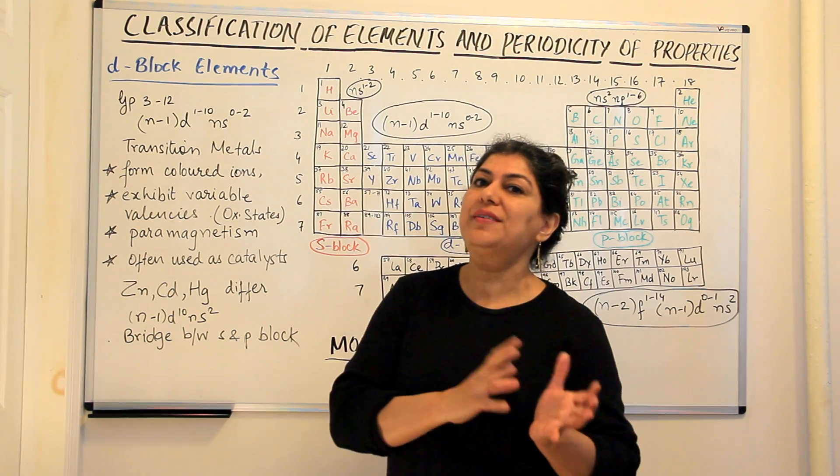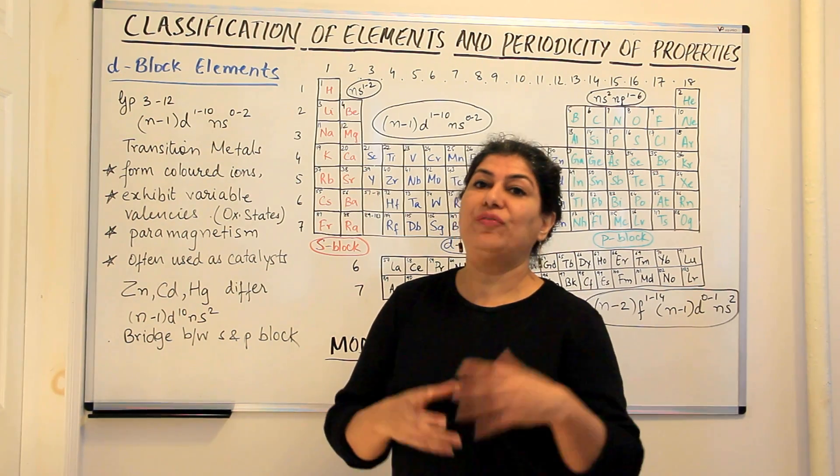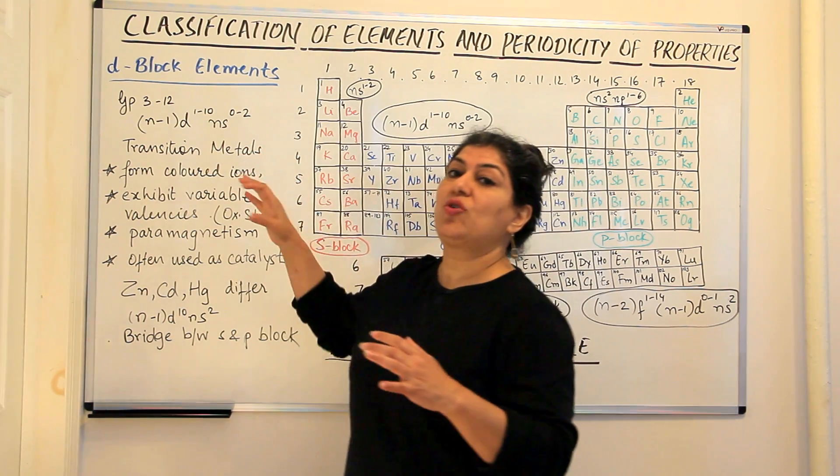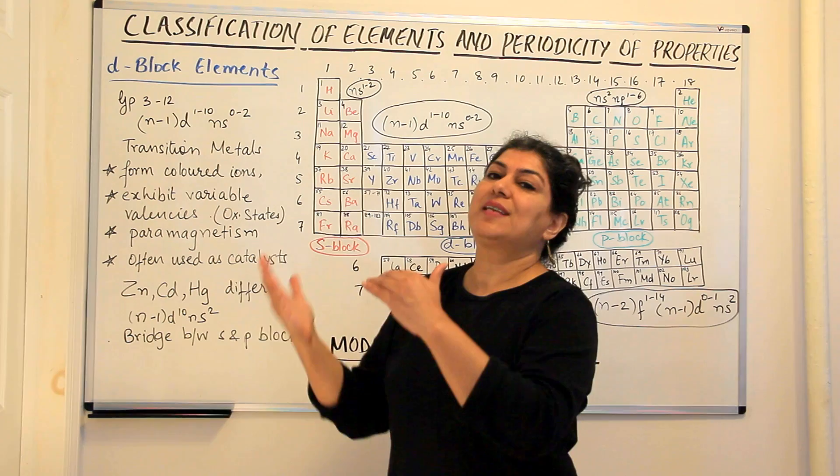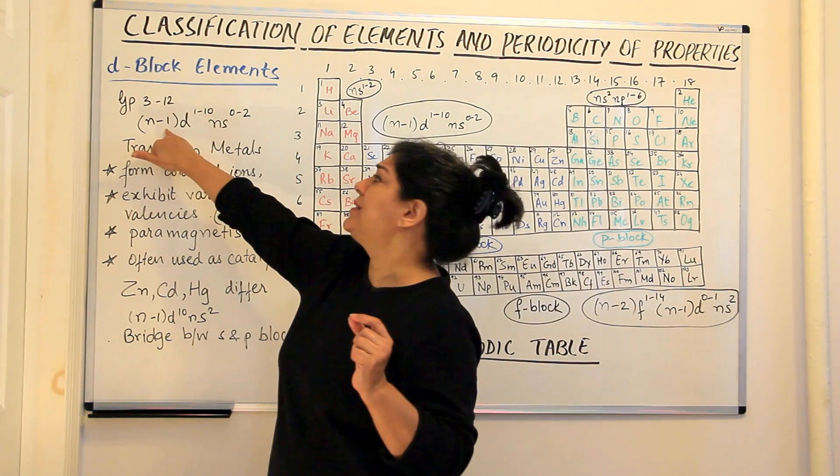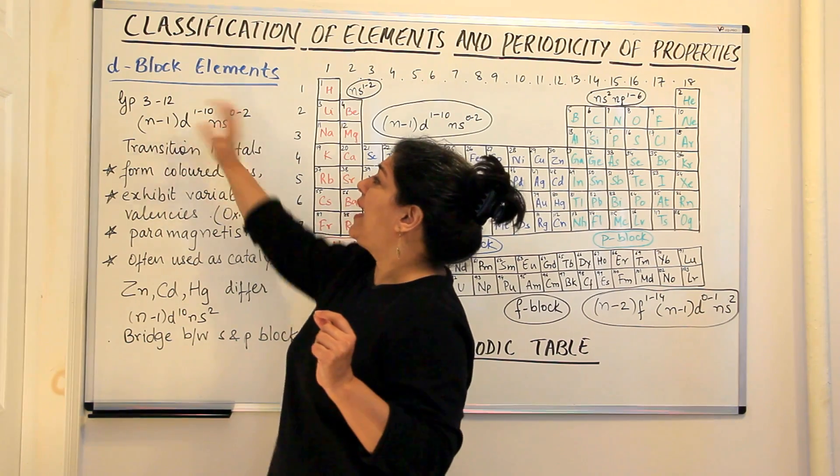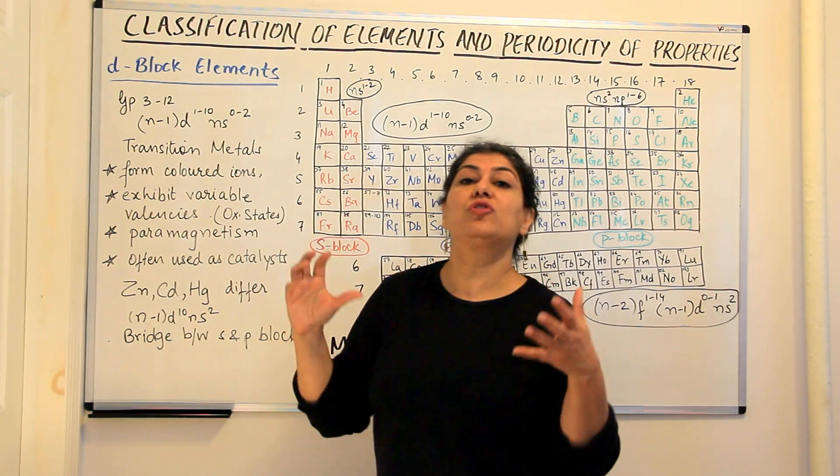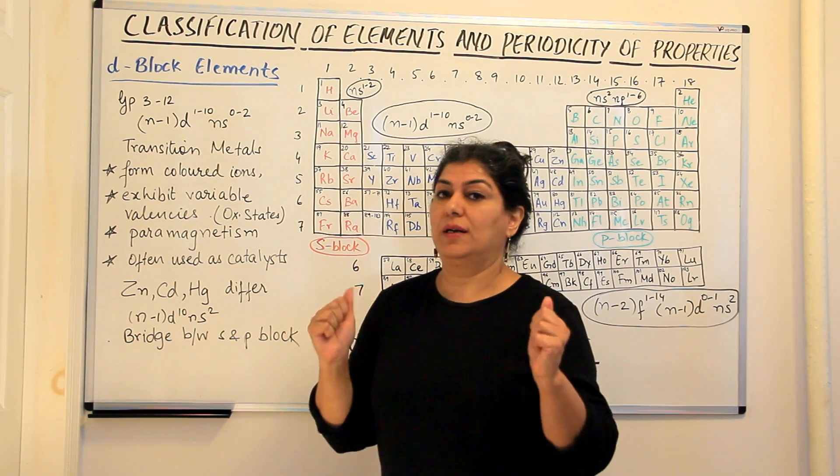In order to acquire that kind of stability of half filled or completely filled D orbitals, the electrons of the S orbital of the next shell sometimes jump up to a higher energy, that is 3D orbitals, and they balance out, they make the overall configuration more symmetrical and more stable.